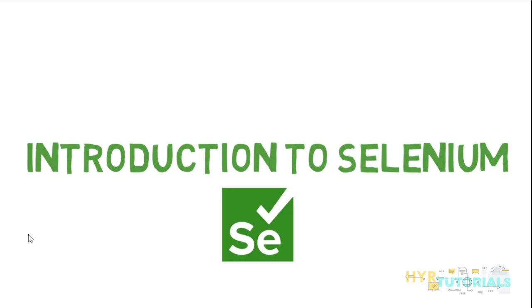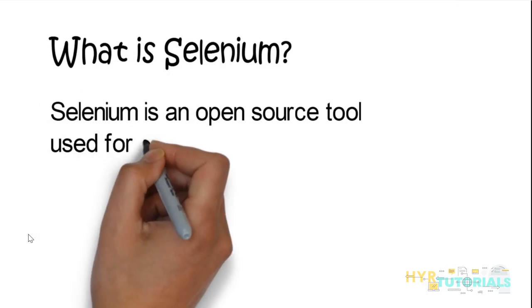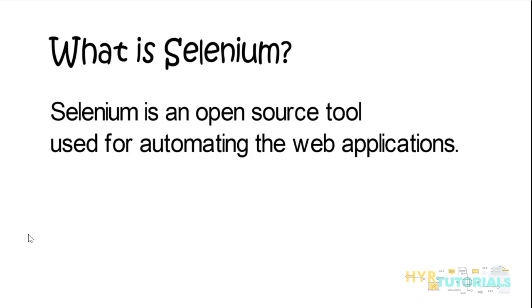So basically Selenium is an open source tool that is used for automating web applications. A web application is an application which can run in the browser — you have so many browsers like Google Chrome, Internet Explorer, and others. An application developed to run under a browser is called a web application, and Selenium helps us in automating these web applications.